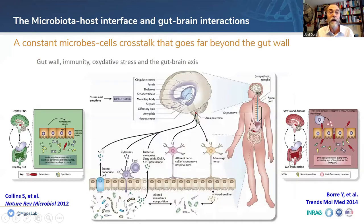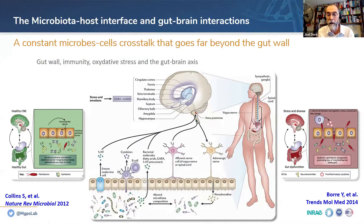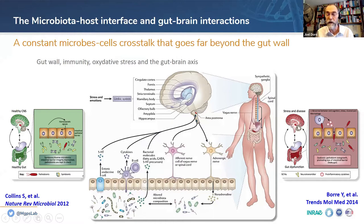The host-microbe crosstalk extends beyond the gut wall all the way to the brain. Gut wall integrity, immunity, and oxidative stress all influence reactions at the brain level — perception of anxiety, for example, can be controlled by this. What has been documented over the past 10–15 years is that gut permeability and inflammation can lead to neuroinflammation and altered perception at the level of the brain, with multiple crosstalk routes going via nervous pathways or blood pathways.